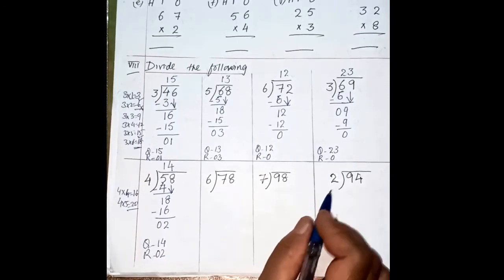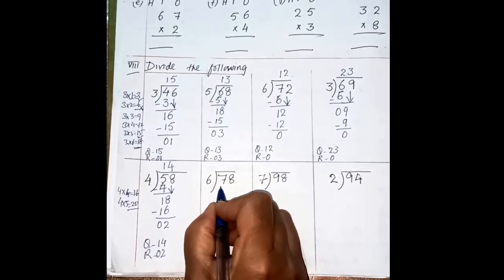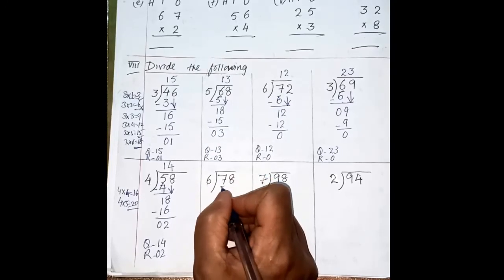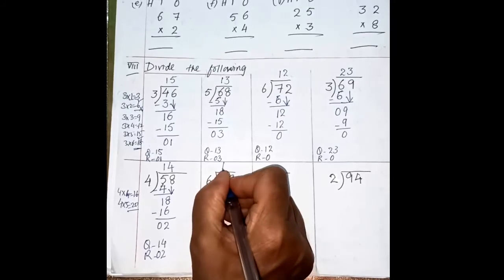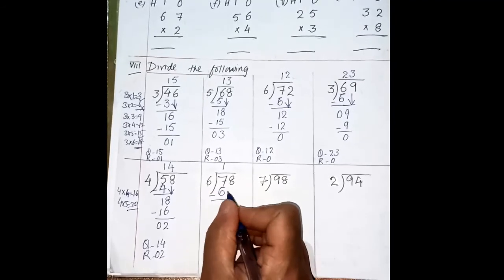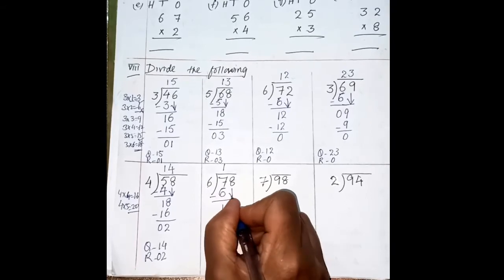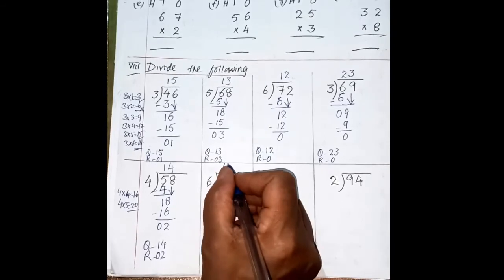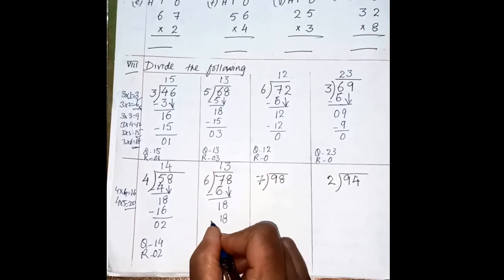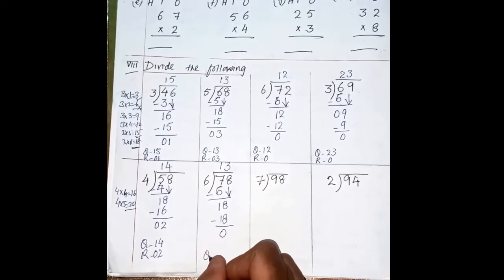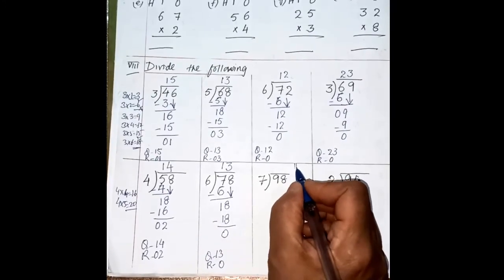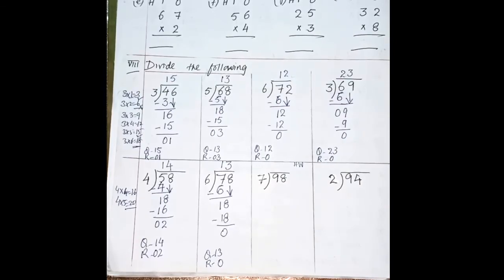Okay, one more sum I will show you. The other two sums you do on your own. Before starting, we have to check the first number. When the first number is greater than the divisor, we have to start one by one — two-step sums. 6 ones are 6, 6 twos are 12 — we cannot take. 6 ones are 6. 7 minus 6 is 1. Your next number is 8, so bring down 8 here. This is 18. In the 6th table: 6 ones are 6, 6 twos are 12, 6 threes are 18 — so it's going 3 times: 6 threes are 18. 18 minus 18 is 0. Your quotient is 13 and the remainder is 0. These two sums you do on your own. We will do the 9th bit in our next class. Thank you.